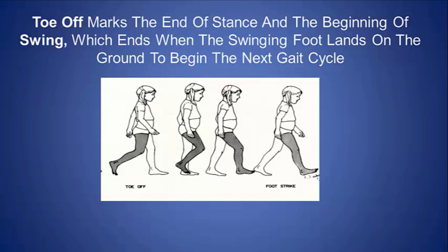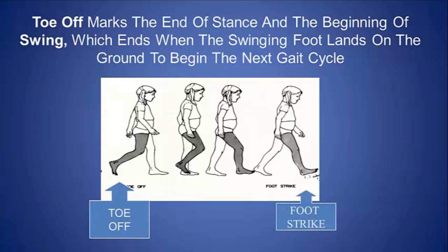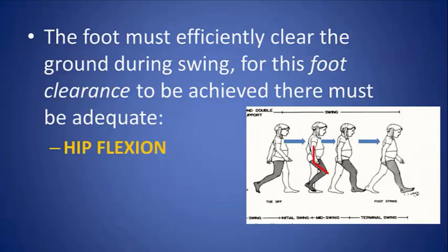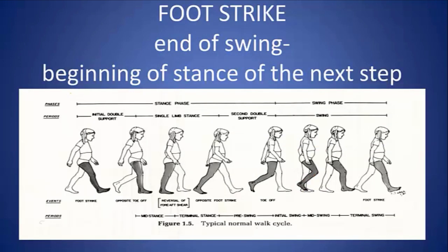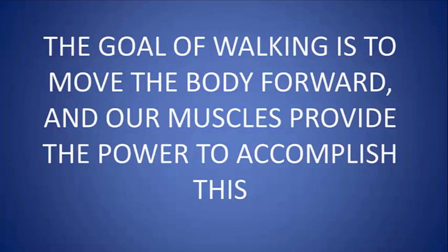Toe-off marks the end of stance and the beginning of swing, which ends when the swinging foot lands on the ground to begin the next gait cycle. For the foot to efficiently clear the ground during swing, foot clearance must be achieved. For this to occur, there must be adequate hip flexion, knee flexion, and foot dorsiflexion. Foot strike marks the end of swing and the beginning of stance of the next step, and thus we go through the same cycle over and over again.